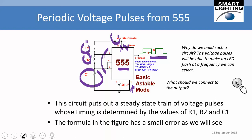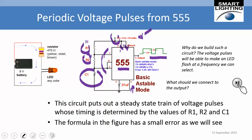The output produces a sequence of voltage pulses going high near the supply voltage and back to zero on a regular basis. To use this, we can connect an LED with a current-limiting resistor between pin 3 and ground. The result is a flashing light whose flash rate can be varied by changing the values of R1, R2, and C.